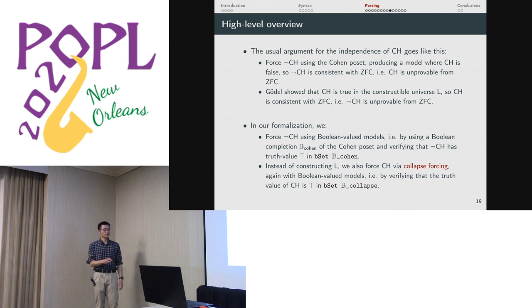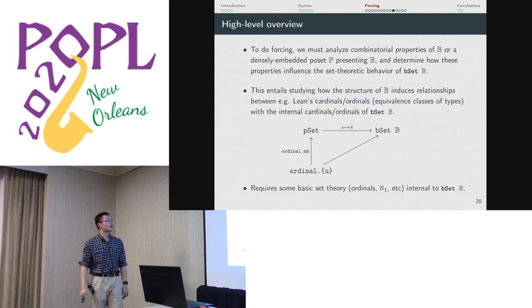We did something different. We took the Boolean-valued approach, which is straightforward enough. But we don't construct L. Instead, we also force CH through another forcing argument. The two arguments are not that similar. So there was a lot of work that had to be done in each case that was not transferable to the other.